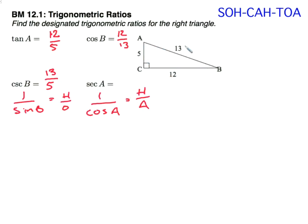And for angle A, the adjacent is 5. The hypotenuse is 13. So I get, again, 13 over 5.